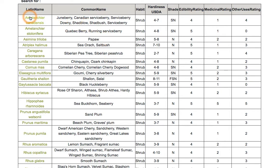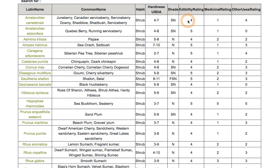Now we have the plants filtered by: habit — in this case shrub — hardiness zones within the range we chose (I think it was six, seven, and eight), shade preference, and edibility rating.